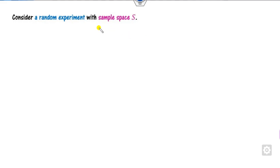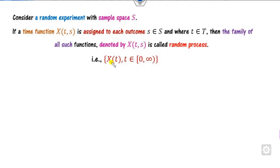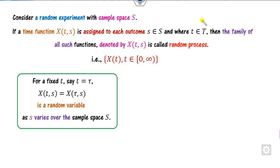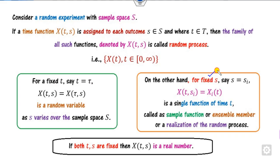What we have discussed so far: if you have a random experiment with a sample space S, then it is called a random process when you assign a parameter t corresponding to each outcome, denoted as x(t). If you fix the value of t, then this random process is nothing but a random variable. If you fix the parameter S, then the random process is a function of time t. If you fix both t and S, then it is a real number.